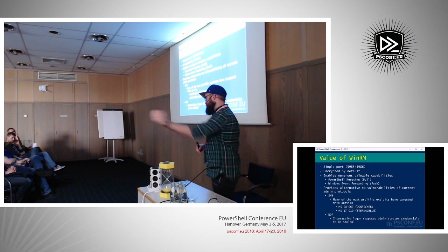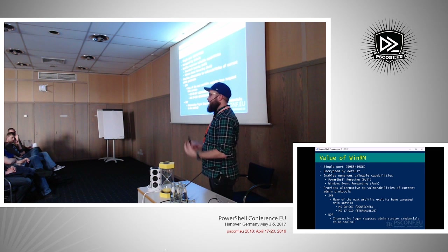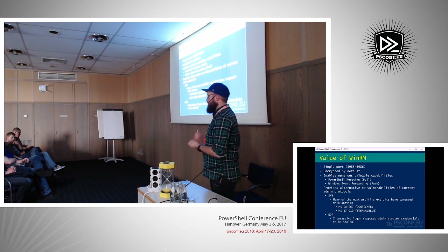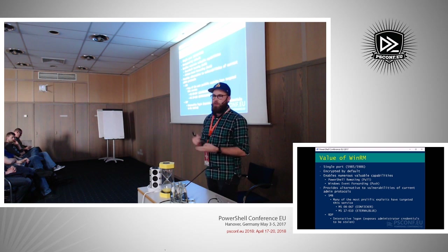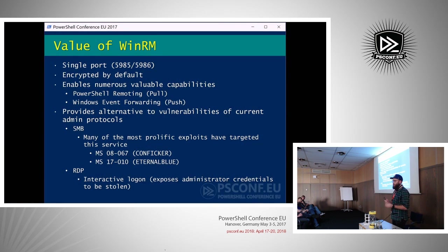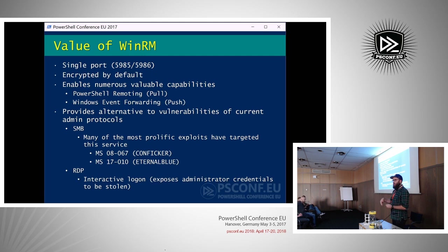Network logons do not expose your credentials on the remote system, whereas interactive logons — logging on to the console, RDP — do. WMI and WinRM are network logons and will not expose your credentials on the remote system. The exception is CredSSP, which exposes your credentials because it allows the double-hop. Generally when you have a double-hop issue, your credentials were not passed to the remote system. When we're looking for bad guys, we don't want to be spraying credentials all over the place.